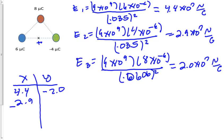And then all we need to do is summarize these. So we have a negative 2.0 for our y direction there. And then we have a positive 7.3 for our x direction.